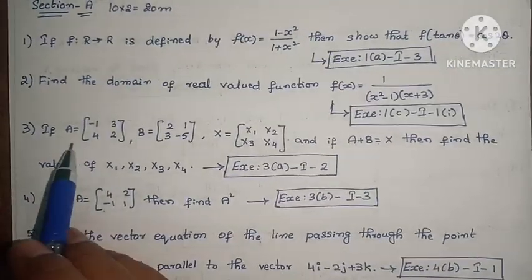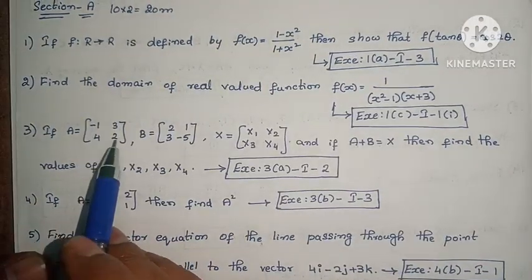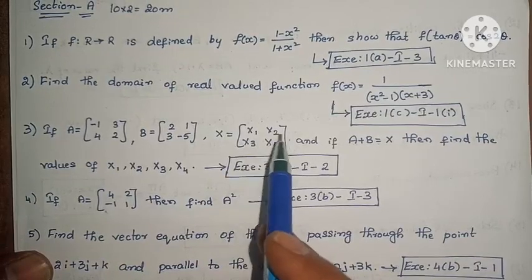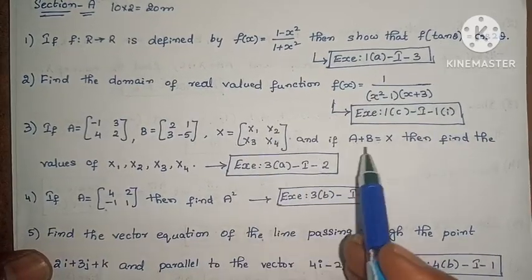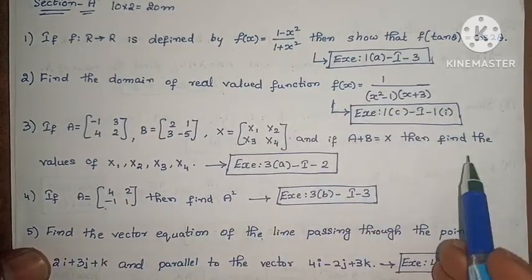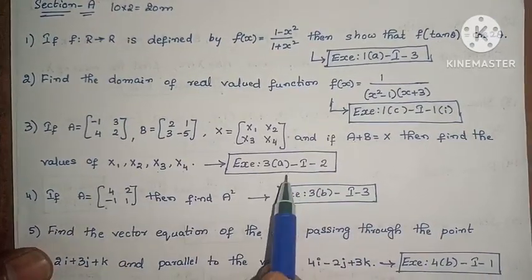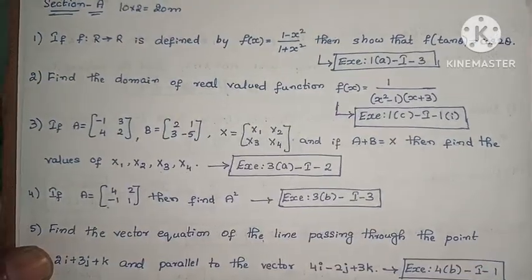Next, if A equals [-1, 3, 4, 2], B equals [2, 1, 3, -5], X equals [x1, x2, x3, x4], and if A plus B equals X, then find the values of x1, x2, x3, x4. Exercise 3, First Roman, Second one.